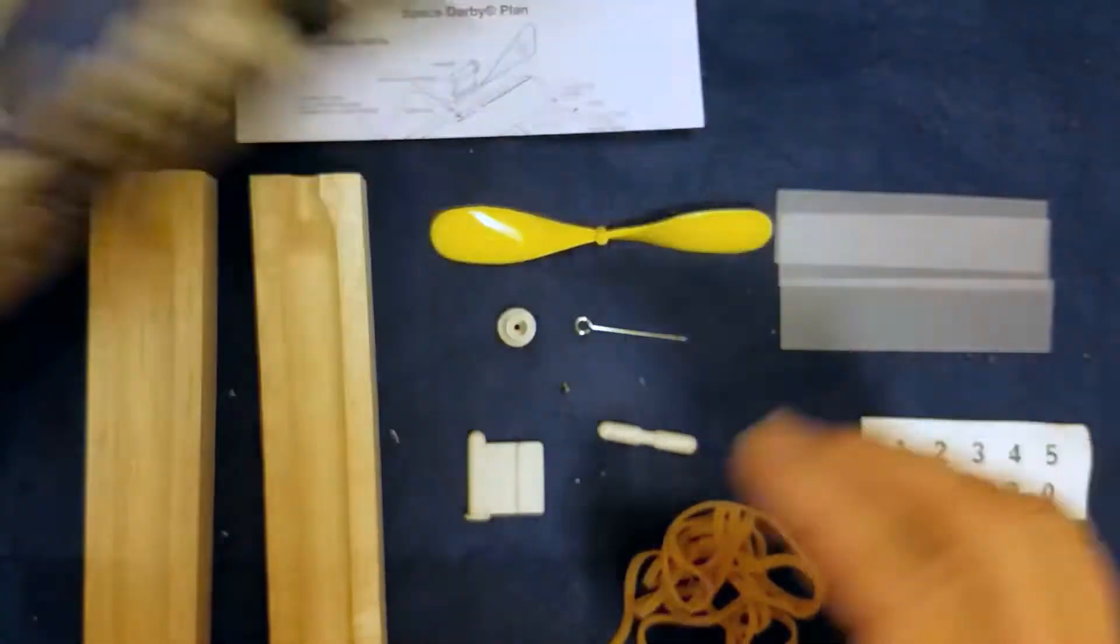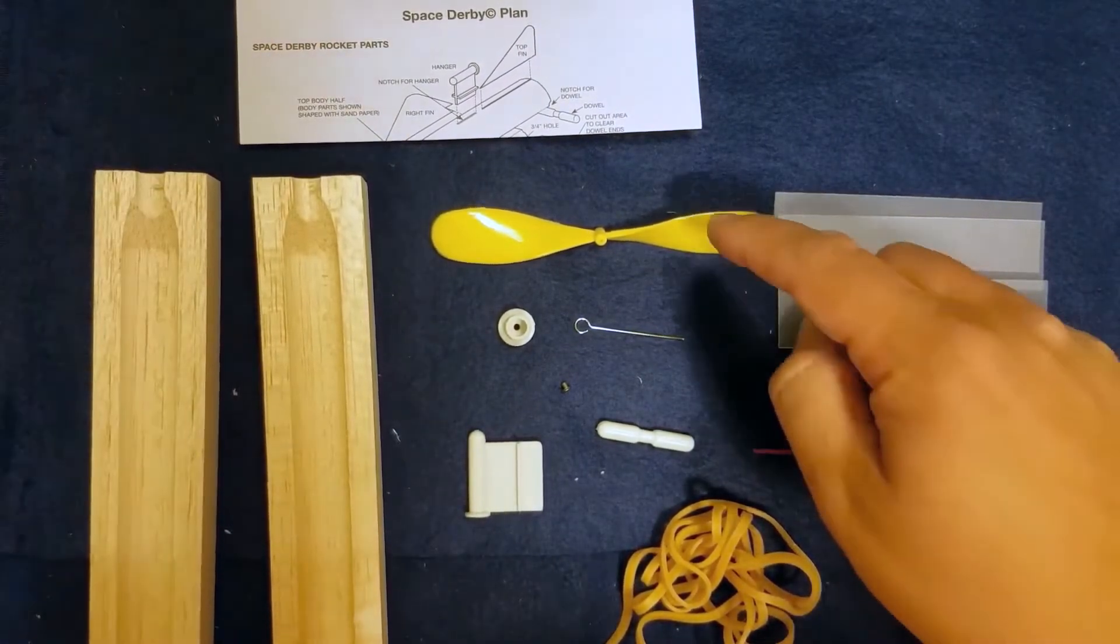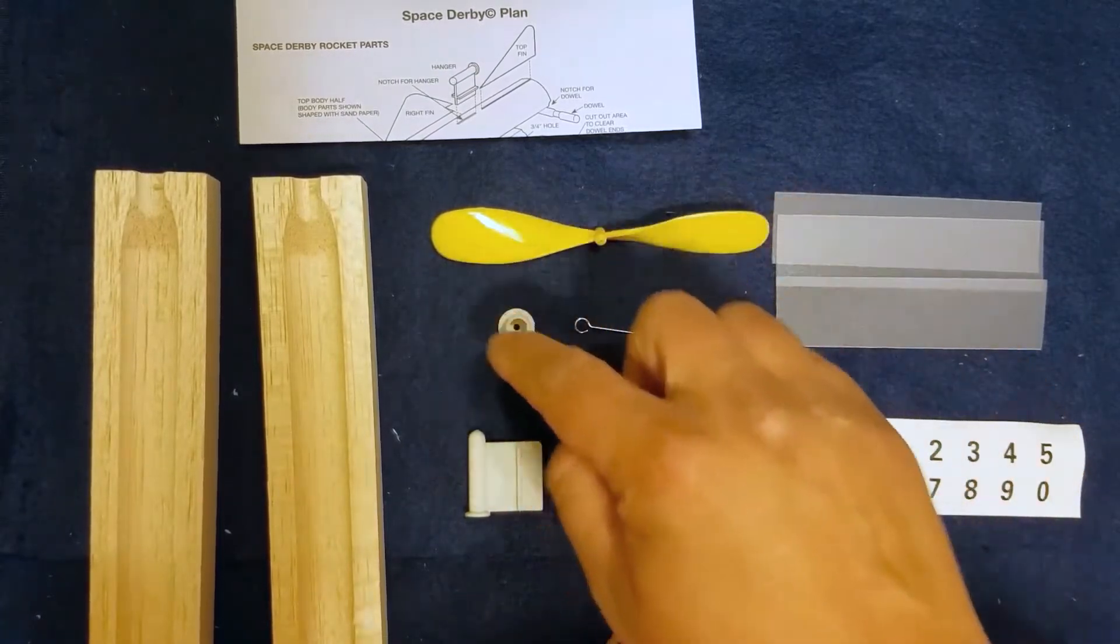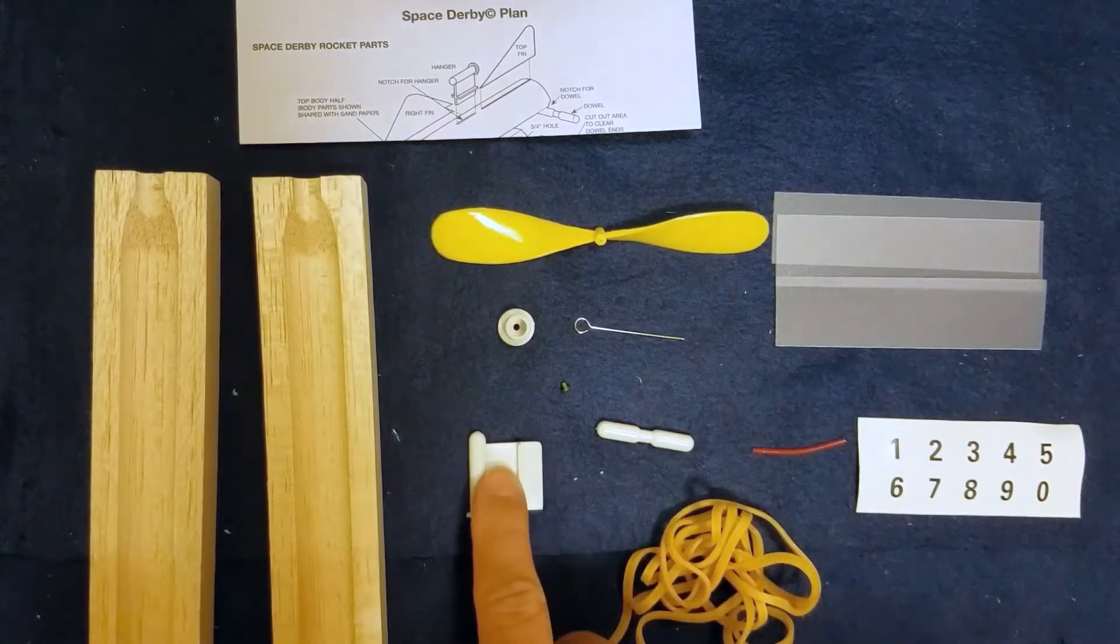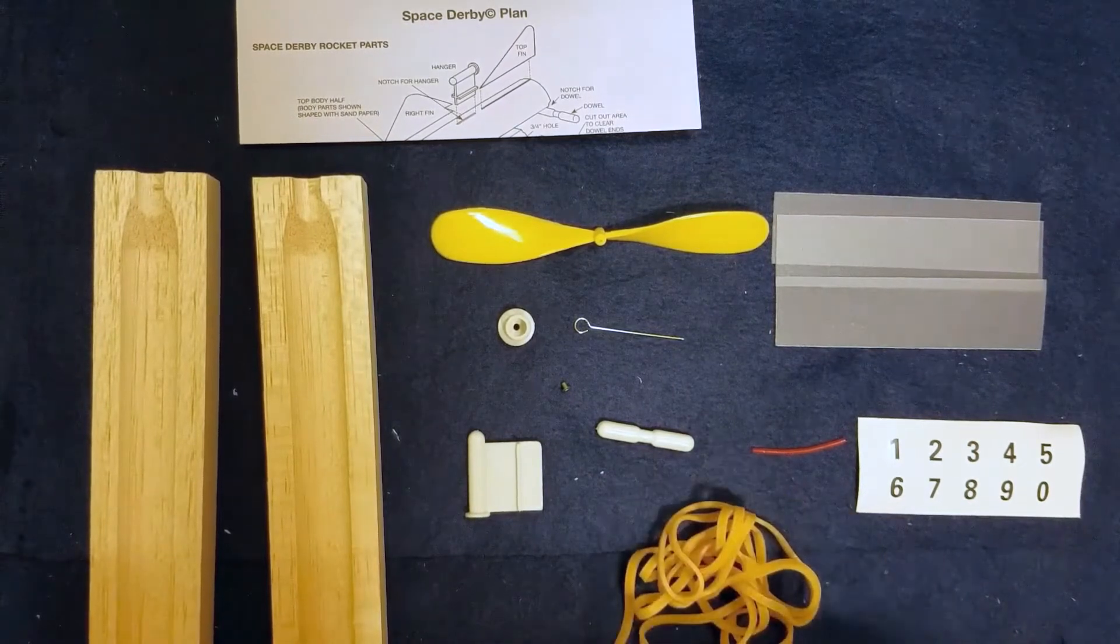Inside of our space derby box we have our two halves of our space derby rocket, our directions, our fins, our numbers, the portions of the propeller assembly, the hanger assembly for the track and our rubber bands which help make things go.